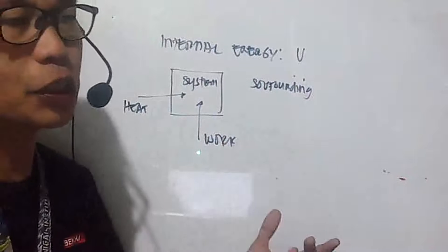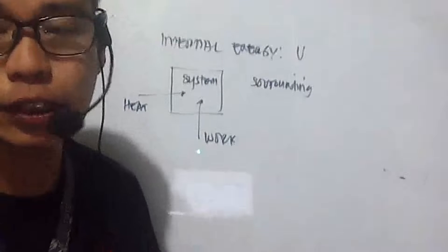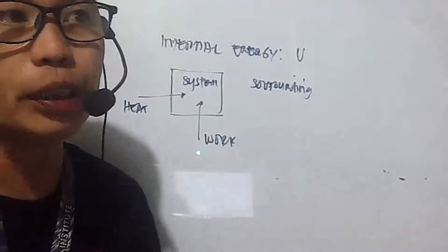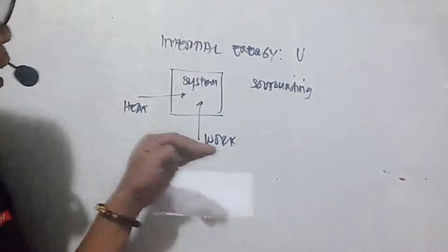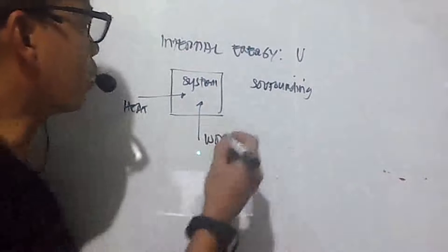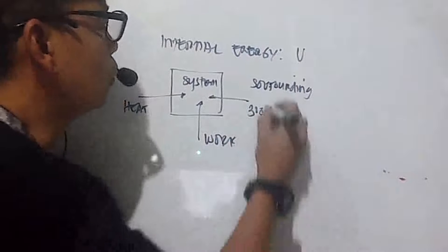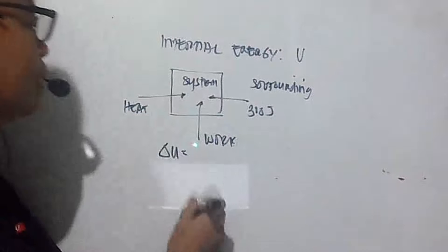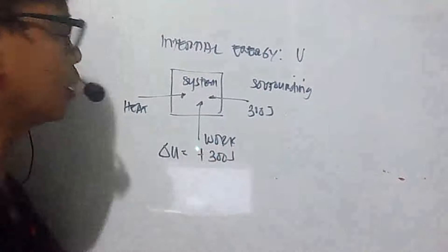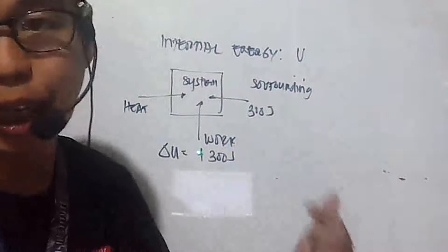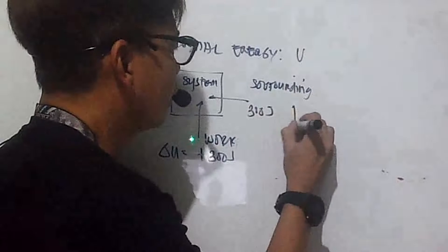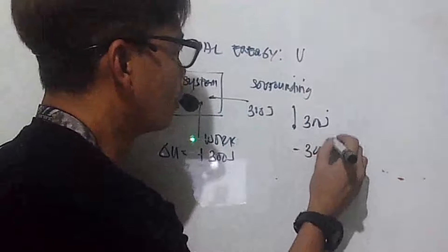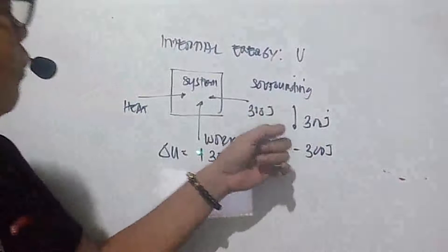If work is done by the surroundings to the system, there will also be a change in internal energy. Those are the two ways energy is transferred: heat absorbed or given by the system, or work given by the surroundings or by the system. For example, if the surroundings give 300 joules of work to the system, the internal energy delta U of the system becomes positive 300 joules, while the surroundings lose 300 joules.